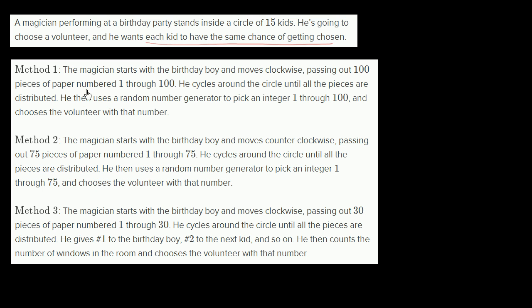Method one: the magician starts with the birthday boy and moves clockwise, passing out 100 pieces of paper numbered one through 100. He cycles around the circle until all the pieces are distributed. He then uses a random number generator to pick an integer one through 100 and chooses the volunteer with that number.